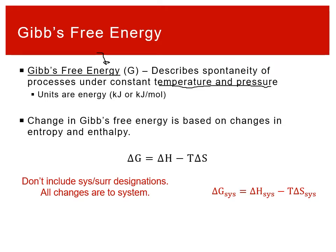Gibbs free energy is composed of enthalpy and entropy. The change in Gibbs free energy is: ΔG = ΔH − TΔS, where T is temperature. This combines the same ideas we saw previously. In this definition, there are no system/surroundings designations because they all describe the same thing — everything refers to the system, so ΔG(system) = ΔH(system) − T·ΔS(system).